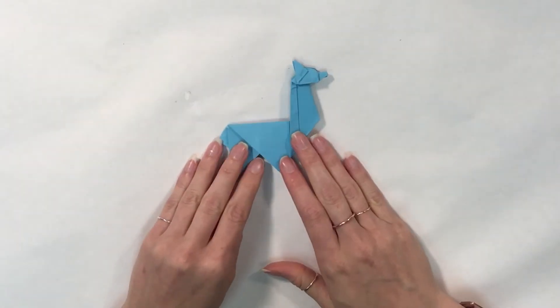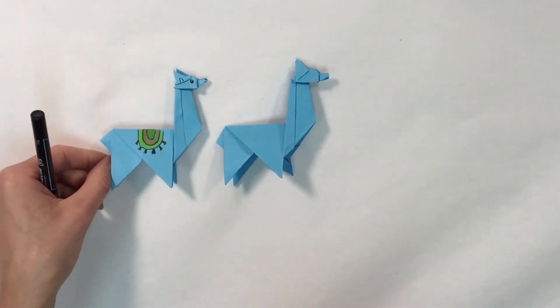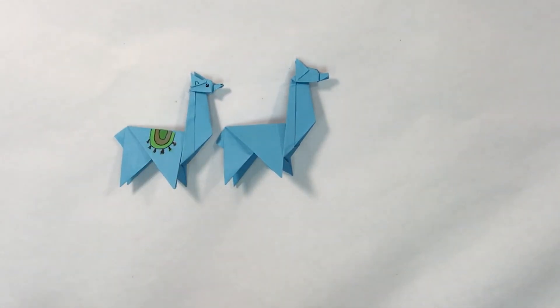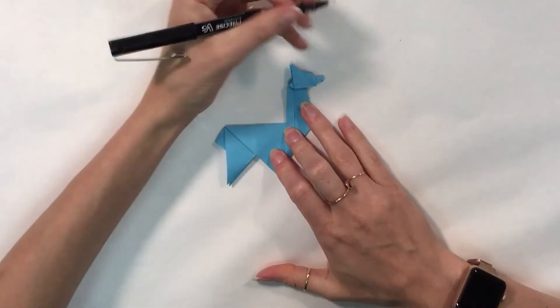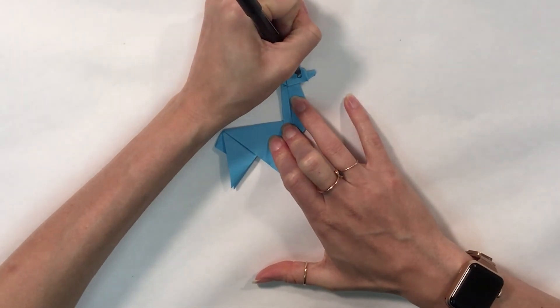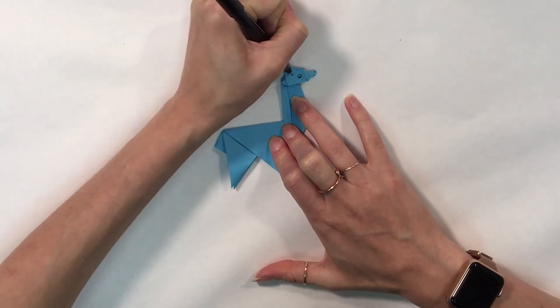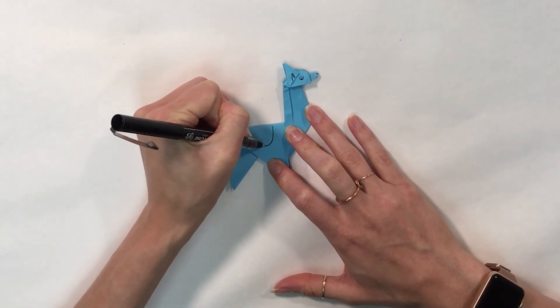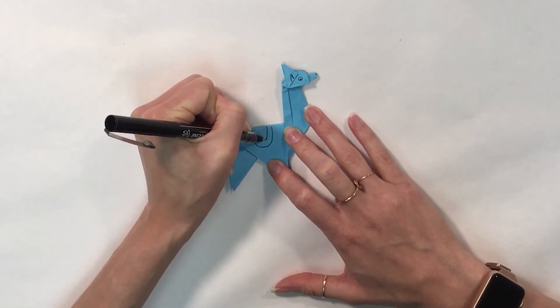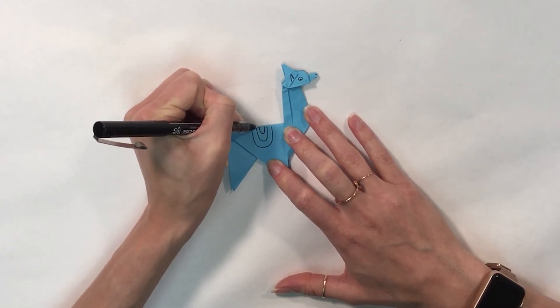Now, if I want to add a little bit of decoration to my llama, I absolutely can. I'm going to give them a face and a little blanket if I would like. I'm going to start by giving my llama an eye, a nose, an ear, and then three U's for the blanket.